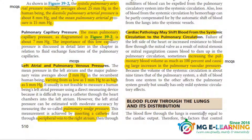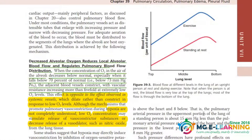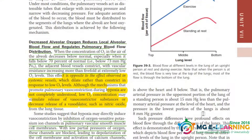Next is blood flow through the lungs and its distribution. This is again an important conceptual topic — it's mostly theory, so you have to read it. All the important points you need to memorize with respect to MCQs are highlighted. This picture is not important.